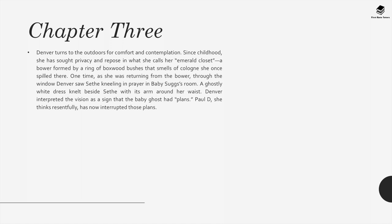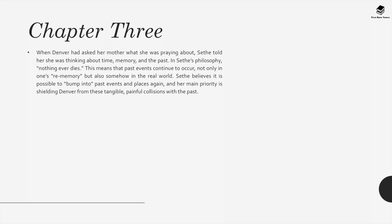Chapter 3: Denver turns to the outdoors for comfort, seeking privacy in what she calls her emerald closet — a bower formed by a ring of boxwood bushes. One time, through the window, Denver saw Sethe kneeling in prayer in Baby Suggs's room, with a ghostly white dress kneeling beside her with its arm around her waist. Denver interpreted this as a sign that the baby ghost had plans, which Paul D. has now interrupted. In Sethe's philosophy, nothing ever dies — past events continue to occur not only in memory but somehow in the real world, and her main priority is shielding Denver from these painful collisions with the past.